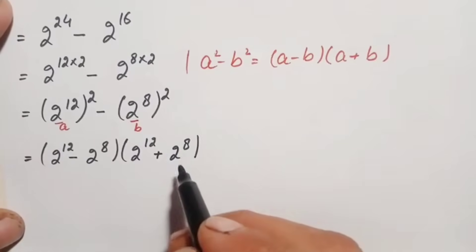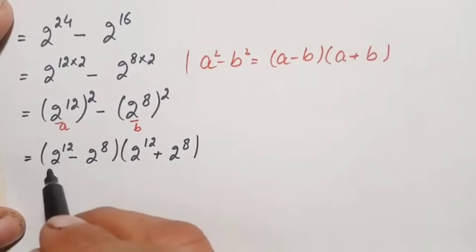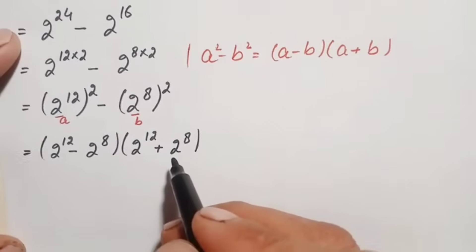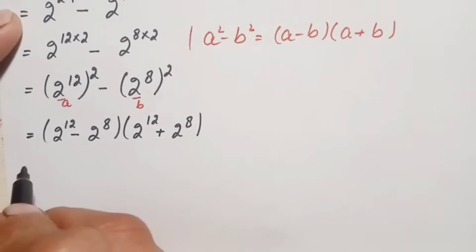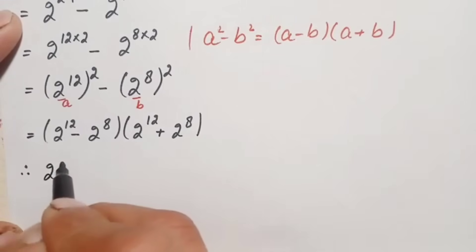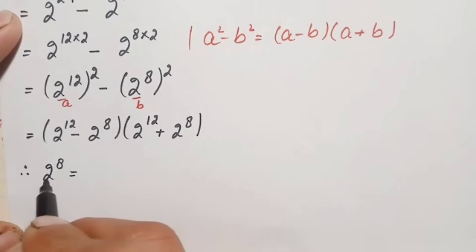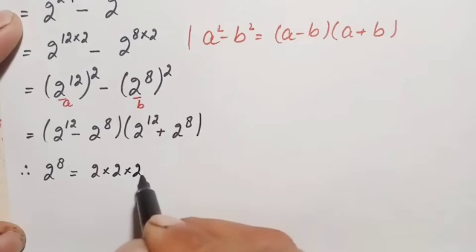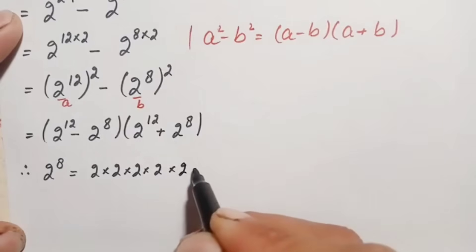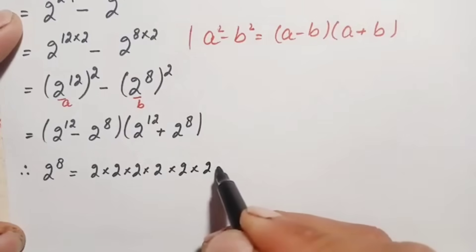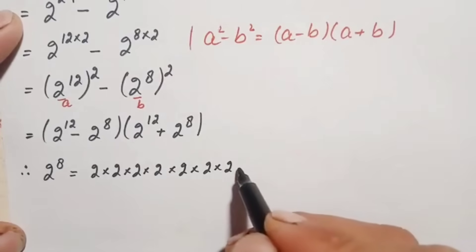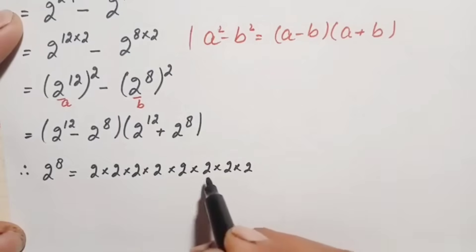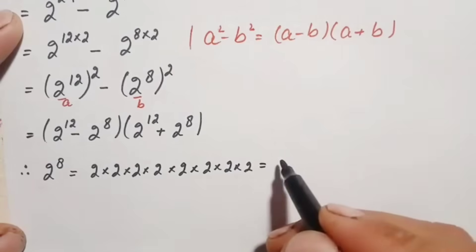Now we find the value of 2^8 by multiplying 2 eight times: 2×2=4, 4×2=8, 8×2=16, 16×2=32, 32×2=64, 64×2=128, 128×2=256. So 2^8 = 256.